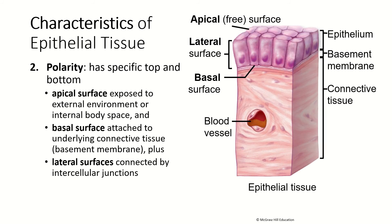The cells in an epithelium have a distinct polarity, meaning they have a specific top side and a bottom side. The top side is called the apical surface. Apical comes from the same root as apex, meaning top. This apical surface is either up against another layer of epithelial tissue, or free-facing the outside, a lumen, or the inside of an organ.